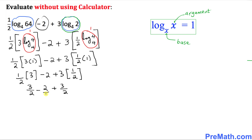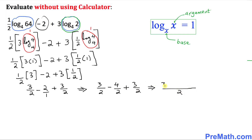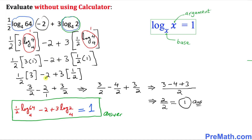I can write 2 as 4 over 2 to get a common denominator of 2. So we have 3 over 2 minus 4 over 2 plus 3 over 2. Since the denominators are the same, this gives us 3 minus 4 plus 3 over 2, which equals 6 minus 4 over 2, equals 2 over 2, equals 1. So our answer is 1.